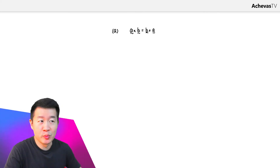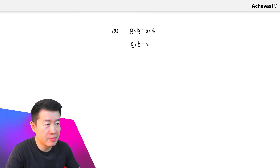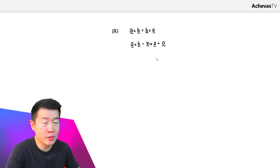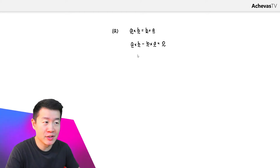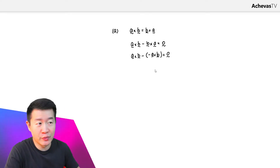We are given a cross b is equal to b cross a, and we can move b cross a over to the left-hand side to get a cross b minus b cross a equals a zero vector. We know that b cross a is minus of a cross b, so we can rewrite this as a cross b minus of minus a cross b, and this is a zero vector.